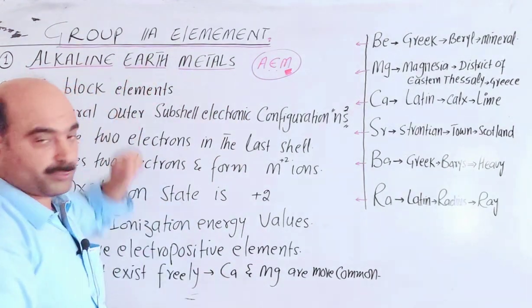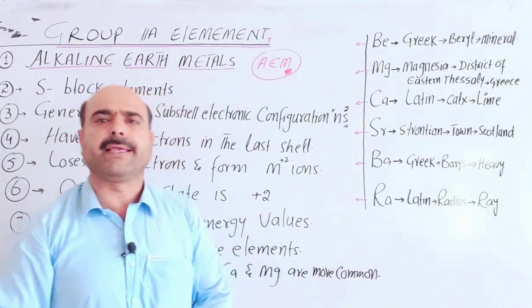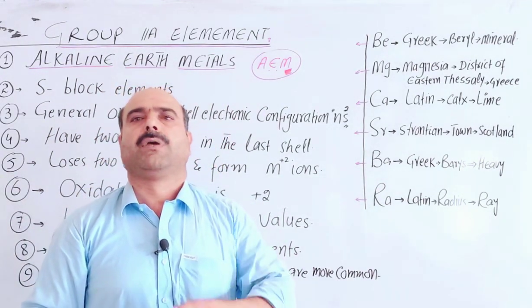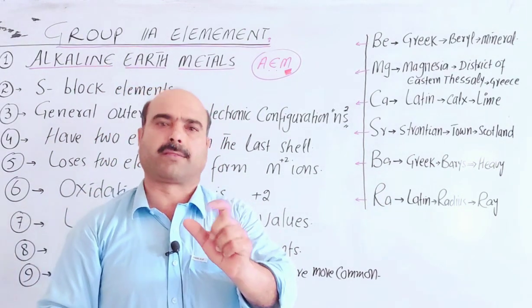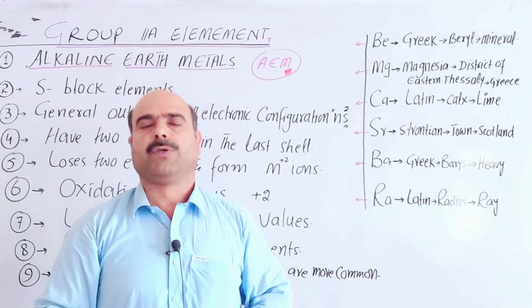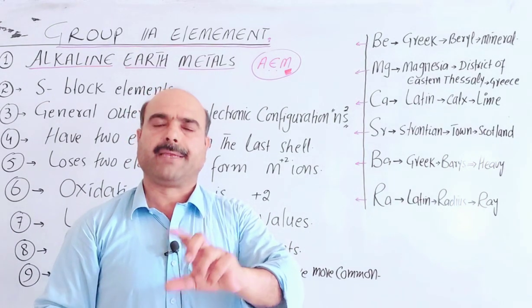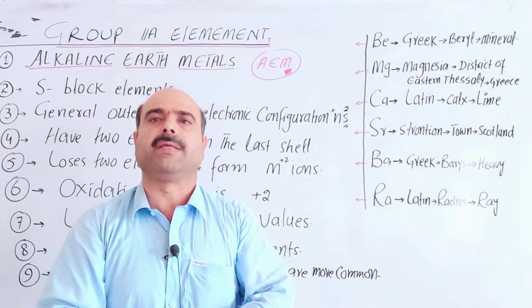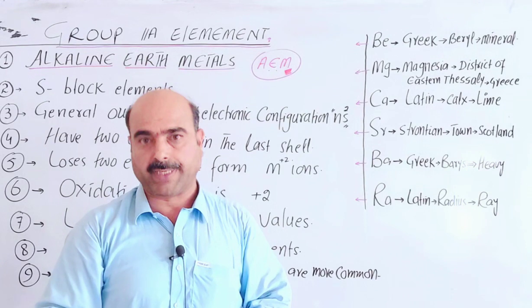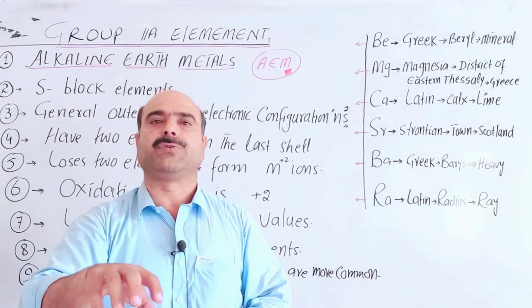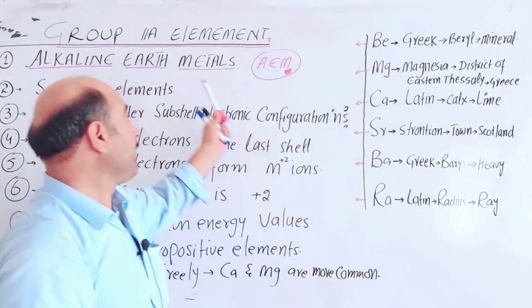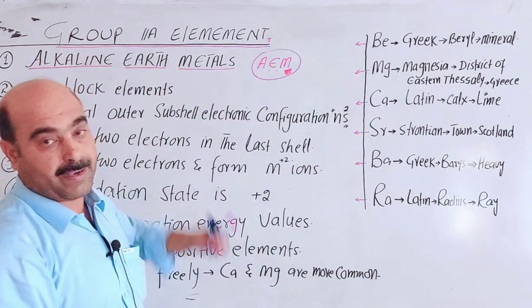Earth - the word earth is used because they don't exist free in nature. They occur mostly as compounds along with impurities in the earth crust. They are in combined form naturally as compounds in the earth crust along with impurities. These minerals and ores have been extracted from earth since ancient civilization, hence the word earth.